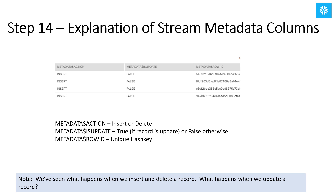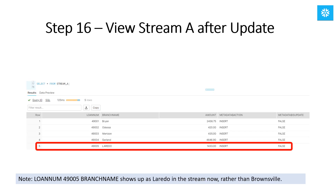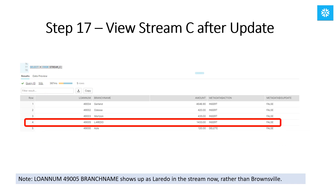We've seen what happens to the streams when we insert and delete a record in the table, but what happens when we update a record? We'll change the branch name for the Brownsville branch to the Laredo branch in my table. Note that in stream A, the first stream we created, the branch named Brownsville now shows as Laredo, but the is_update column is false. That is because there was already an entry in the stream for loan number 549005 previously because of the timing of when we created stream A. The same thing applies to stream C, which was also created at a point before the entry was inserted into the table, so both stream C and stream A held that entry in the stream.